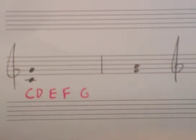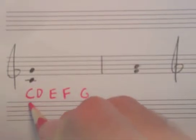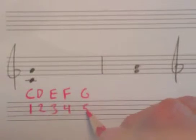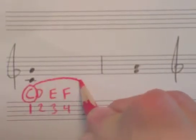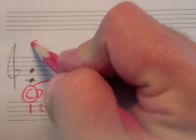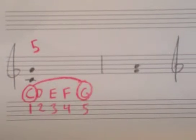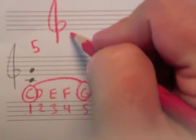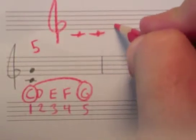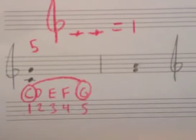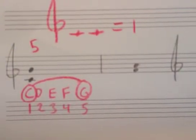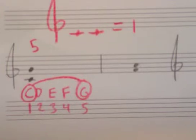And so when we count these, each one would get a count. So C is 1, D is 2, E is 3, F is 4, G is 5. So to go from C to G, this interval size is some sort of fifth. Now one thing that's a little bit unusual when we count generic intervals - C to C equals 1. So if we go from some sort of C to some sort of C, that's always going to be counted as an interval of a first. So that takes a little bit getting used to.